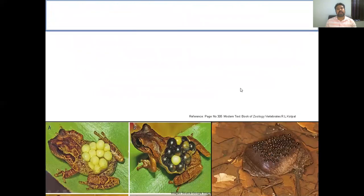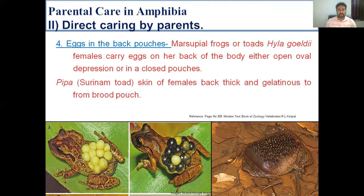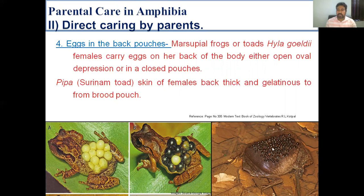The next way of direct caring by parents is eggs in the back pouches. In the case of marsupial frogs or toads, for example, Hyla goeldi, females carry eggs on her back either in open depressions or in closed pouches. A very impressive parental care is shown by the Surinam toad, Pipa, where the back of the female becomes soft and gelatinous. The male presses the fertilized eggs onto it, and development takes place inside this brood pouch. Metamorphosis also occurs inside these brood pouches and the toadlets come out directly.